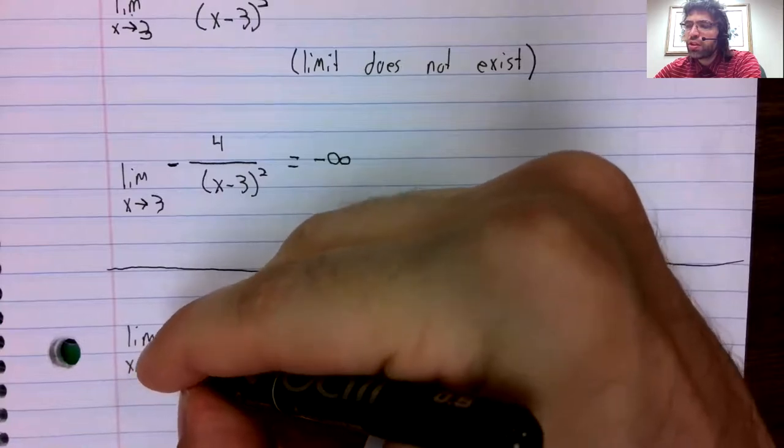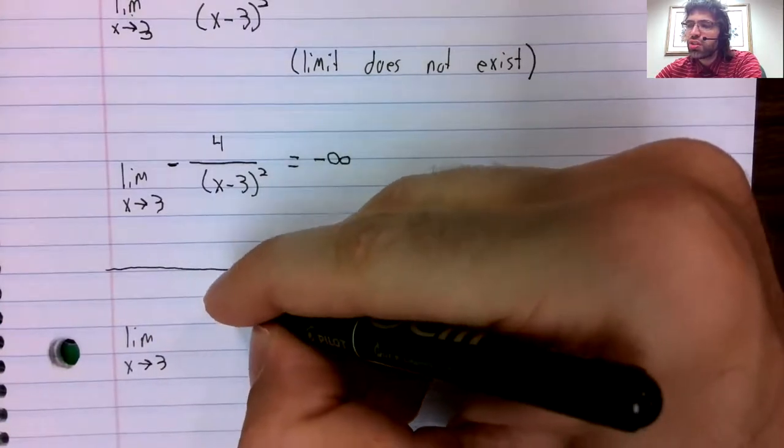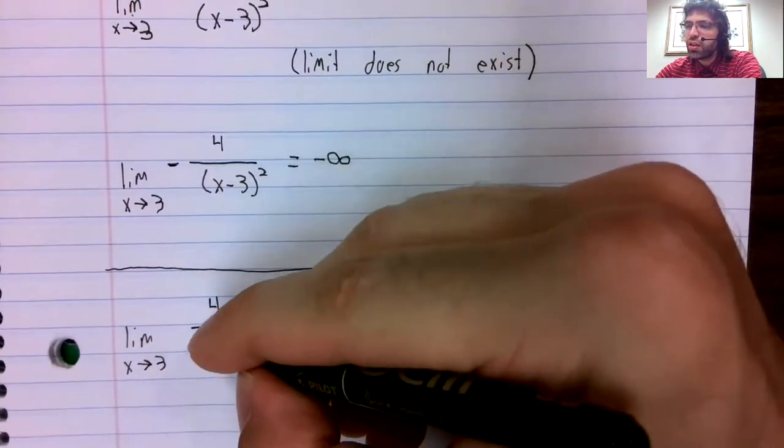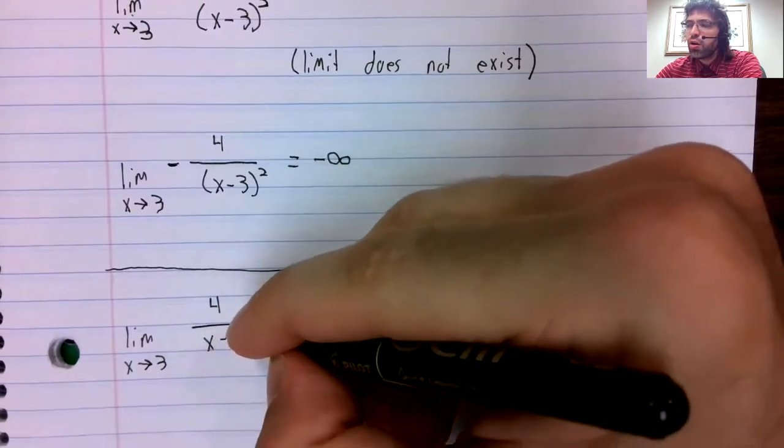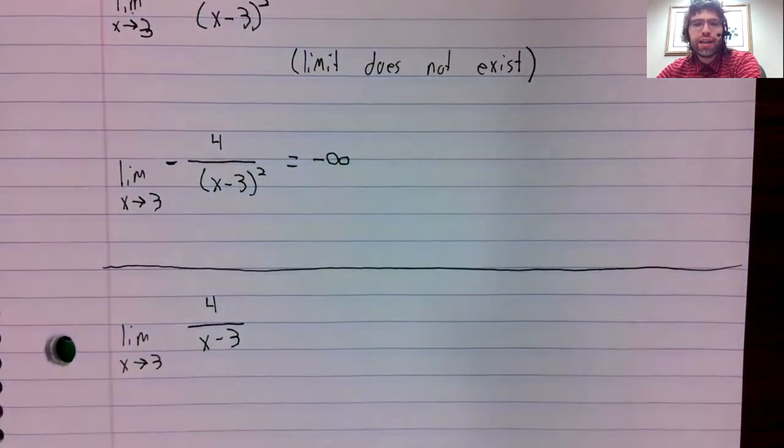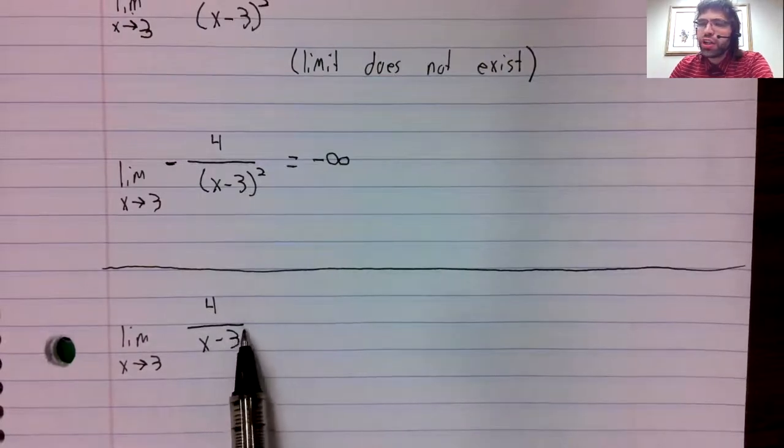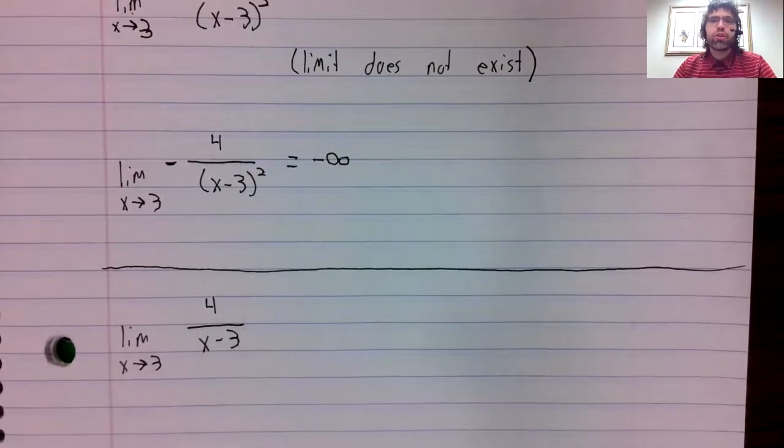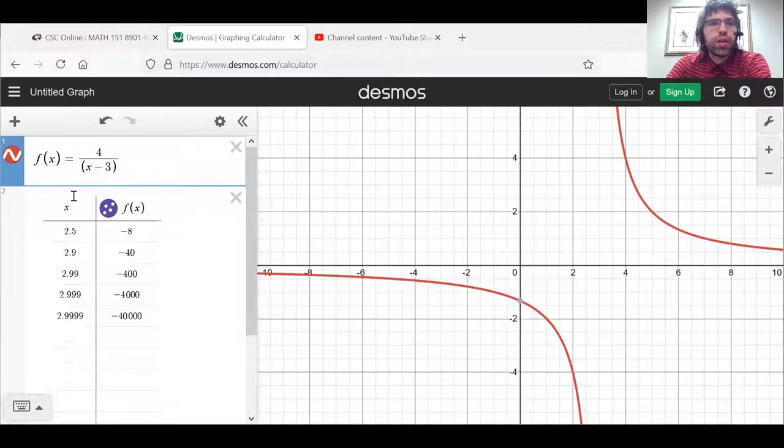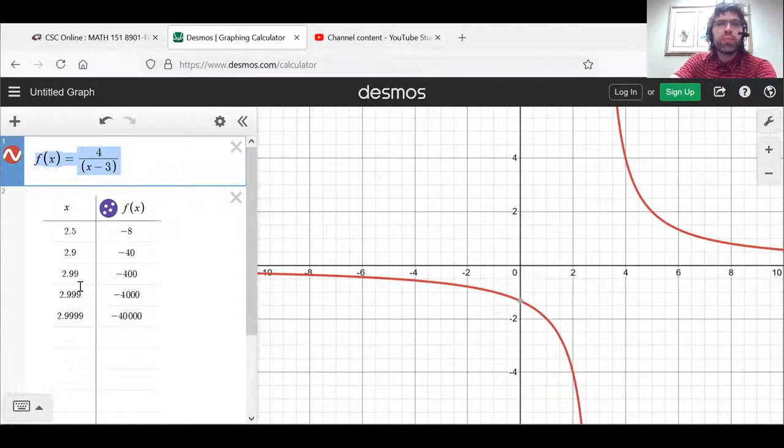That's a look at the limit as x approaches 3 of 4 divided by x minus 3. So we've gotten rid of the square. And here's the function, and here's part of our table.